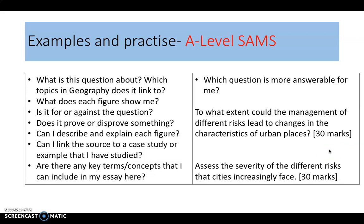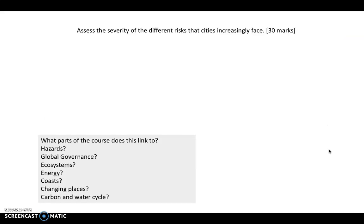Today we're going to be looking at that second question, which looks at the severity of different risks. On the left-hand side here are a series of questions we're going to use to help us consider the different figures we're presented with. The first thing we need to look at is the question itself: assess the severity of the different risks that cities increasingly face. We can underline some of those command words and also some of the key terms, because you're going to need to make sure you're addressing those in your introduction.